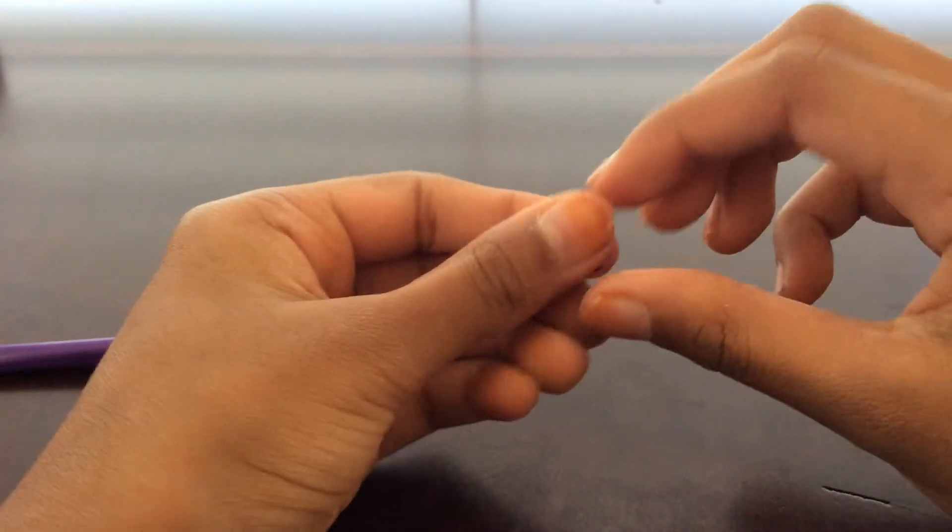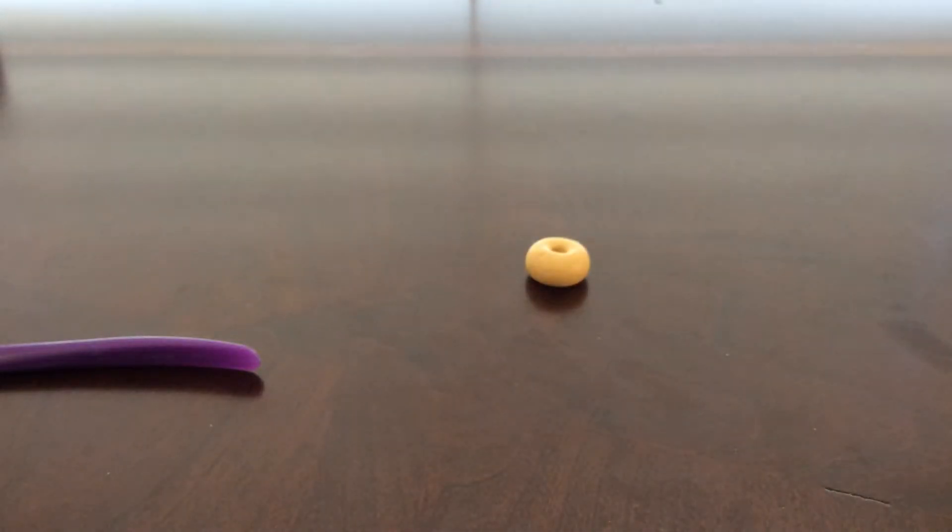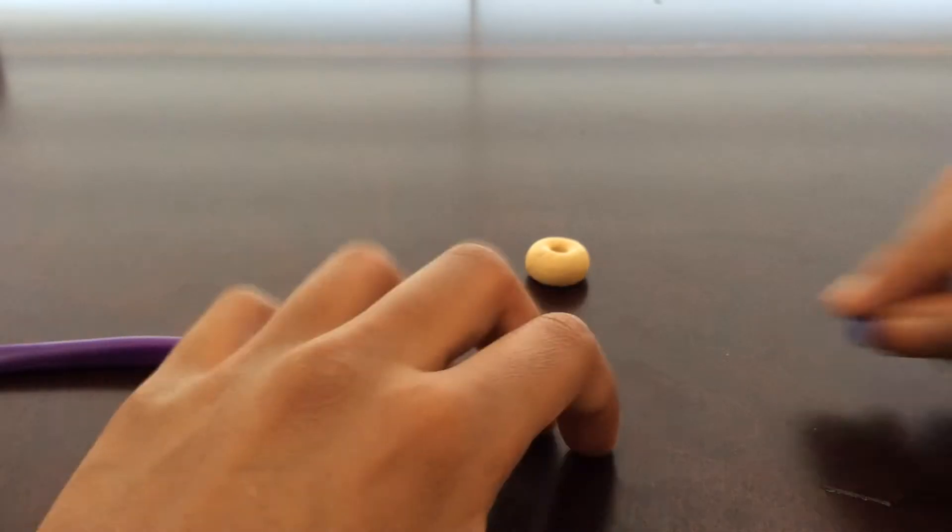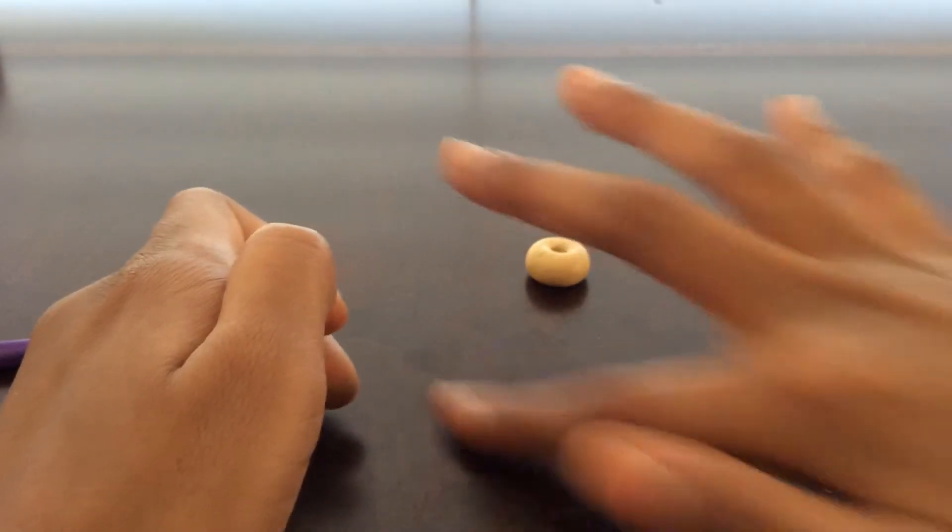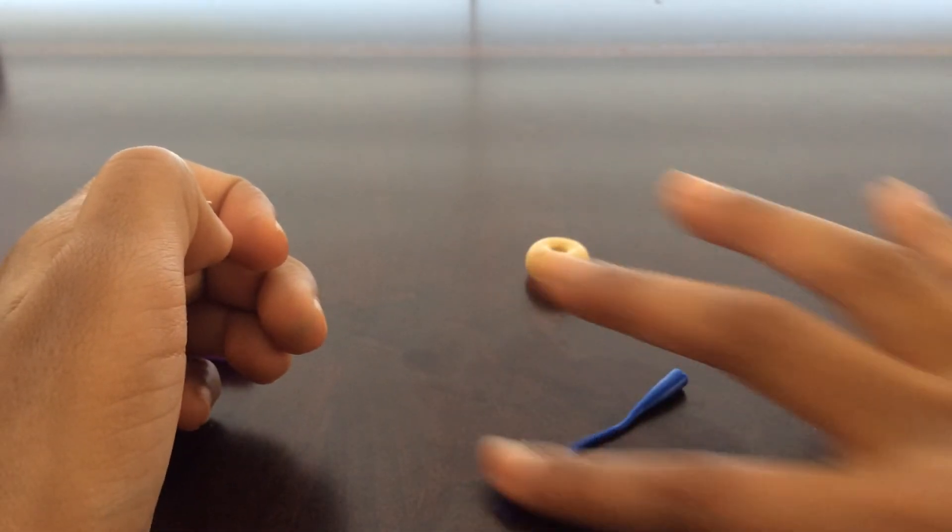Also condition this, and then roll it into a ball and then into a thin snake or a log, whatever you want to call it. Roll it into a really thin snake.